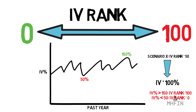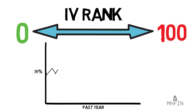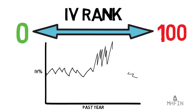IV rank essentially examines the historical highs and lows within a given period and outputs a number interpretable on a simple 0-to-100 range. However, this measurement has a fatal flaw concerning to many traders: IV rank can be deceiving because of outliers. For example, an earnings announcement may cause an underlying IV to spike to 200% for just one day, and IV rank now includes this figure in its calculation, leaving you with a deceiving stat. Extreme outliers can significantly alter IV rankings to the point that they become essentially useless.